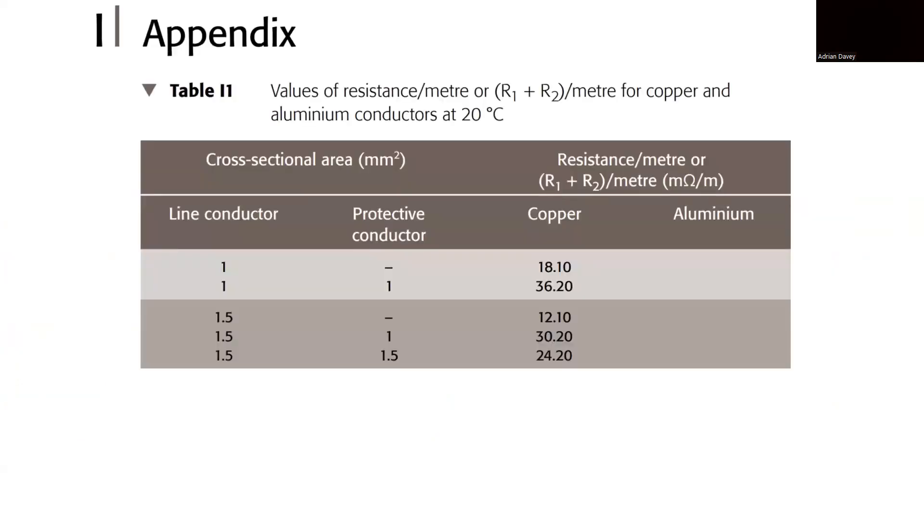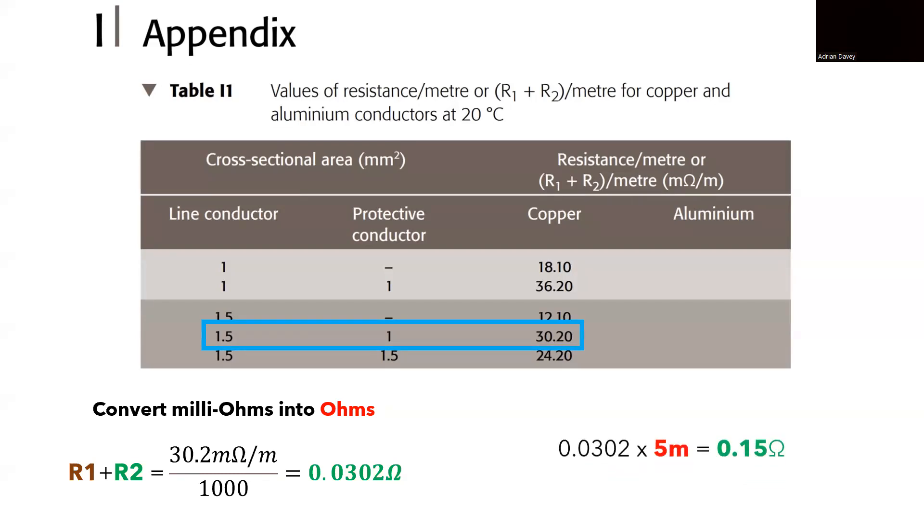To confirm the readings displayed by the meter and ensure their consistency with the expected values, we can refer to appendix I of the on-site guide. This section provides resistance values for R1 plus R2 milliohms per meter. If you are working with twin and earth cables featuring a 1.5 mm squared line conductor and a 1 mm squared CPC, our combined R1 plus R2 resistance amounts to 30.2 milliohms per meter. Converting from milliohms to ohms is a simple matter of dividing by a thousand, making 30.2 milliohms equal to 0.03 ohms. If we consider the 5 meter distance mentioned in the previous slide, our calculated reading rounds down to approximately 0.15 ohms.